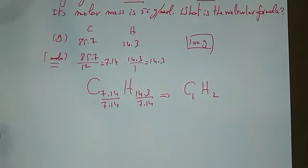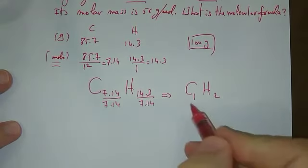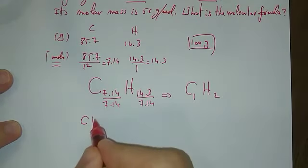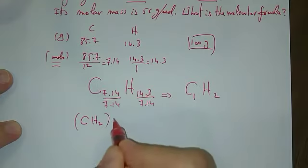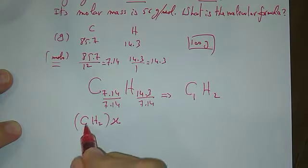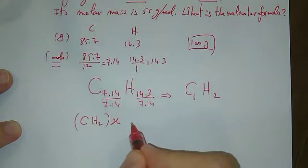However, this is the empirical formula. How to determine the molecular formula? We take the empirical formula, multiply it by a certain number X, and CX and H2X should equal 56 as given.